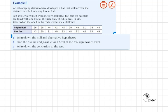So the second example is Example 8. An oil company claims to have developed a fuel that will increase the distance travelled for every litre of fuel. Ten scooters are filled with one litre of normal fuel and ten scooters are filled with one litre of new fuel.